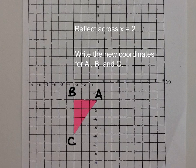And so B is now down here, and that's the point negative 3, negative 2.